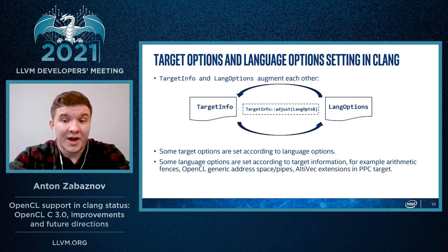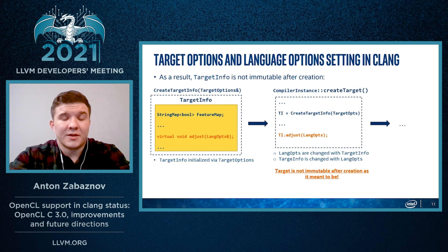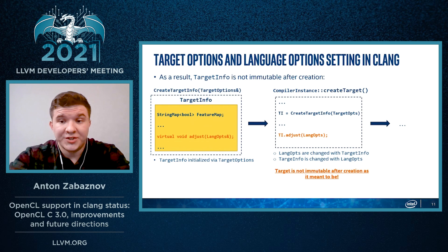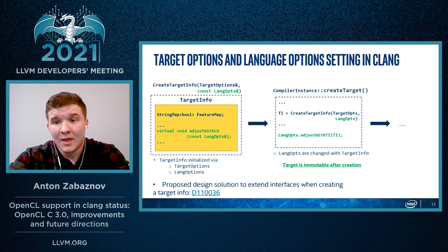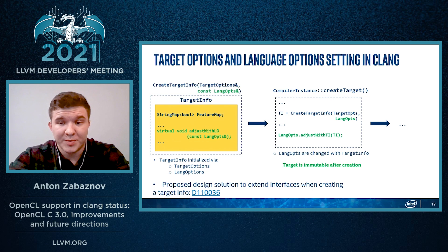There are some other cases such as arithmetic extensions and the AltiVec extension on the PPC target. As a result, the target is not immutable after its creation as it was meant to be. There is a method called 'adjust' which informs the target information about language options, effectively modifying the target. This is not an elegant solution, and there have been proposed some extensions to the current interfaces, in particular distinguishing responsibilities in this whole process of option settings.